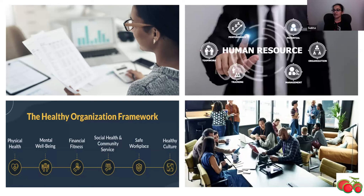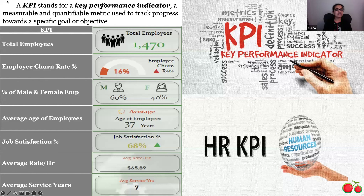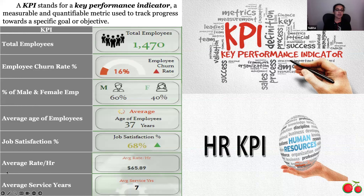With the help of an HR dashboard such as this, I believe organizations can align their objectives with the skills and capabilities of their workforce. These are the KPIs of my dashboard: count of total employees, the employee churn rate which is the attrition rate percentage, percentage of male versus female employees, the average employee age, job satisfaction percentage, average rate per hour given to employees, and average service years.